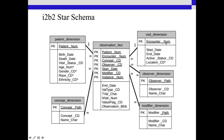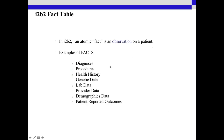The visit dimension gives you one visit associated to multiple different observation facts. You can have many-to-many relationships for observers, modifiers, and concepts.